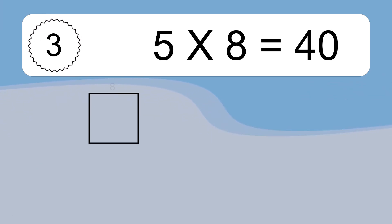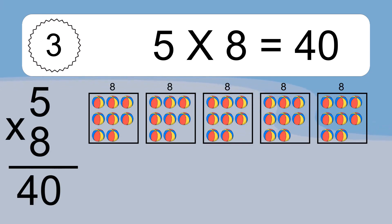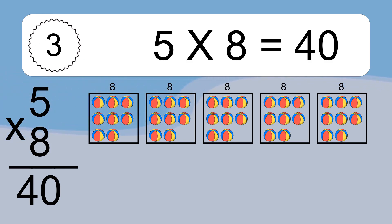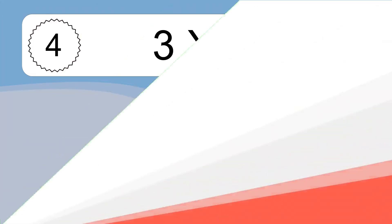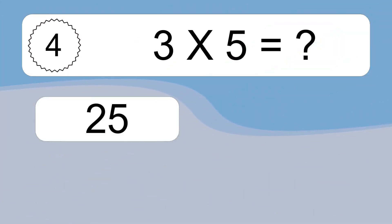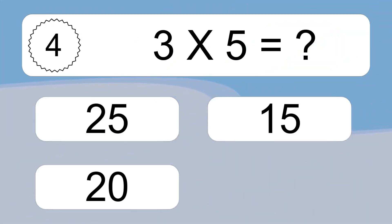6 times 1 equals what? We have 5 boxes, and each box has 8 colorful balls inside. If you count all the balls in all the boxes together, you will have 5 times 8 balls. This equals 40 balls.